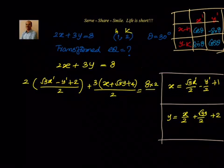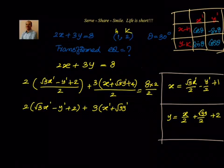Plus 3 into y, that is x dash plus root 3 y dash plus 4, divided by 2 is equal to 8. And can I write it as 8 into 2 by 2? So if I multiply the whole equation with 2, then I will be losing all the denominators.